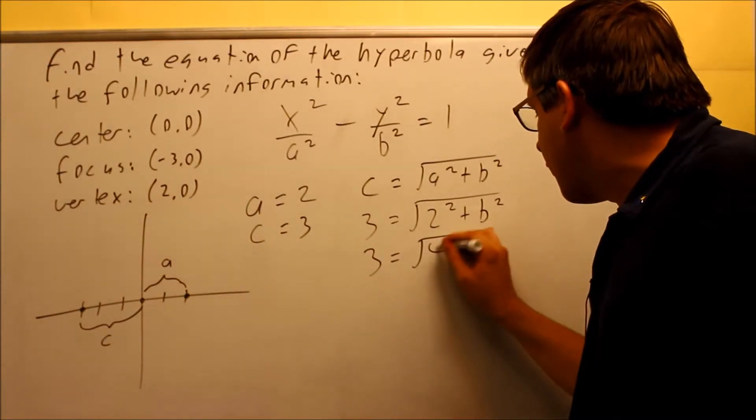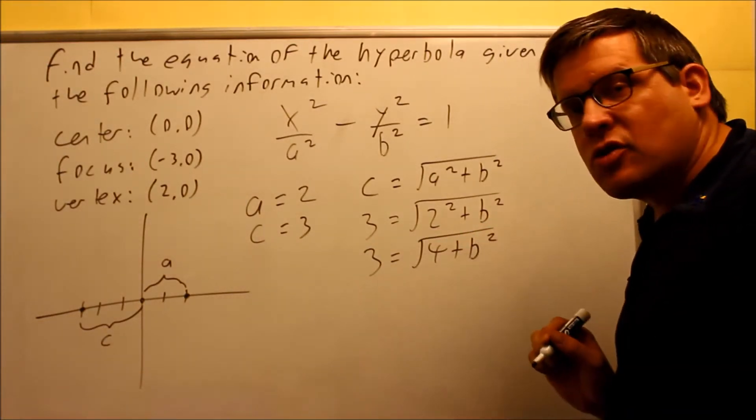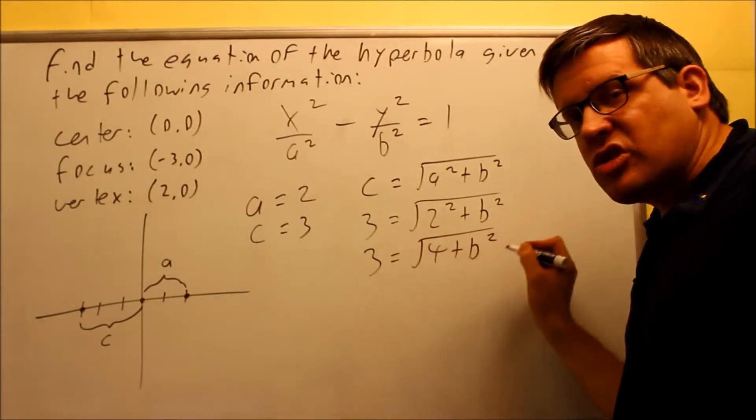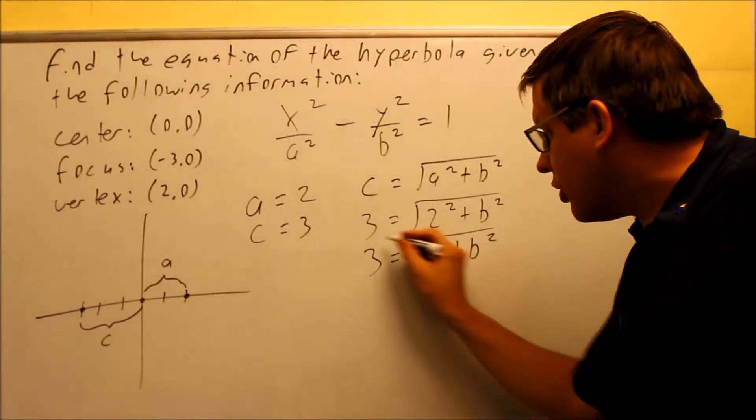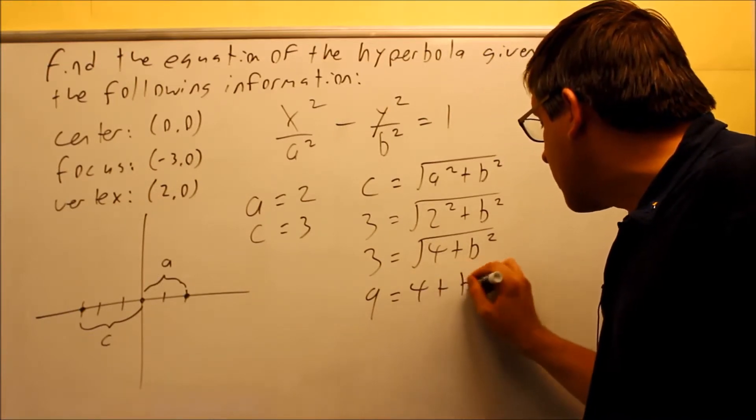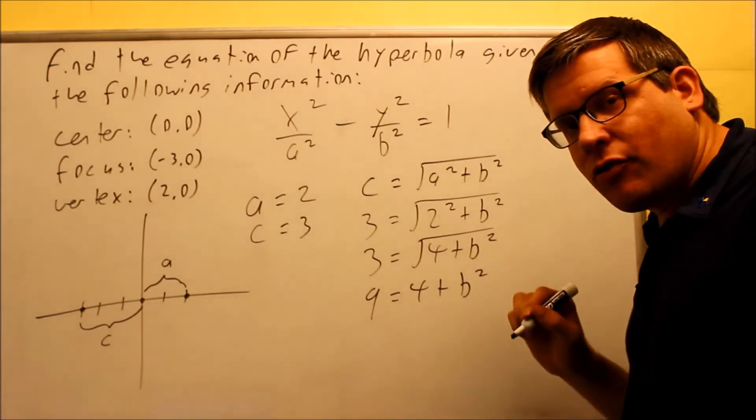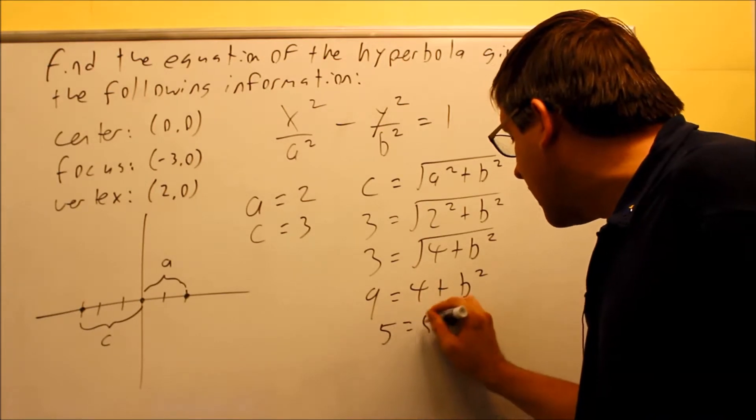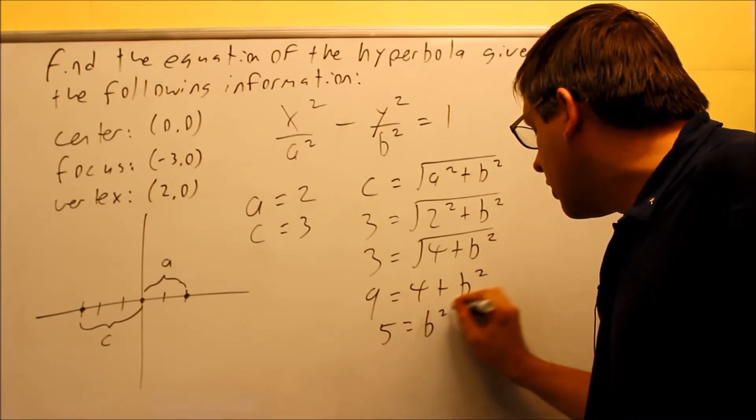So we can also rewrite that as 4 plus B squared. You want to square both sides to cancel out the radical. When you square this side, you're going to get 9. So you get 9 equals 4 plus B squared. So subtract the 4 from both sides and you get a 5 for the B squared.